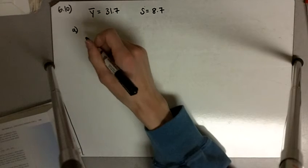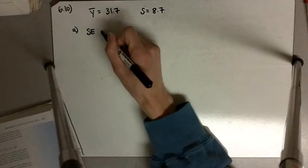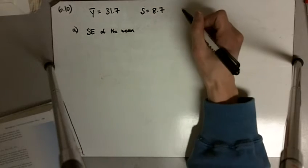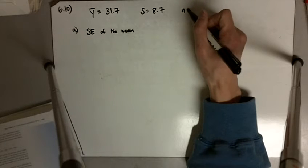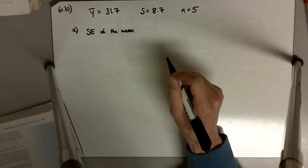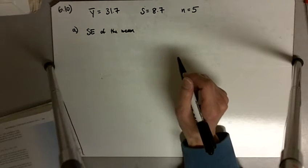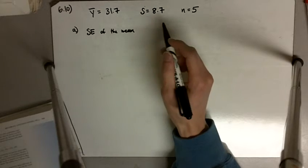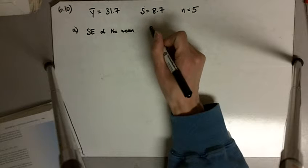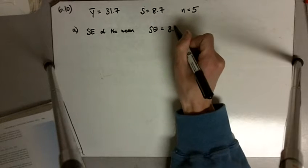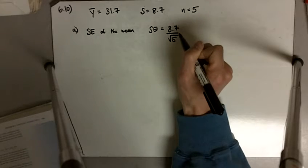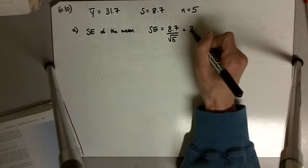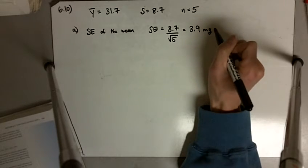Part A asks us to calculate the standard error of the mean. One more number we need is how many we have in our sample, and here we have five. So the standard error of the mean is just our standard deviation divided by the square root of n. Our standard error is 8.7 divided by the square root of 5, which gives us about 3.9 milligrams.